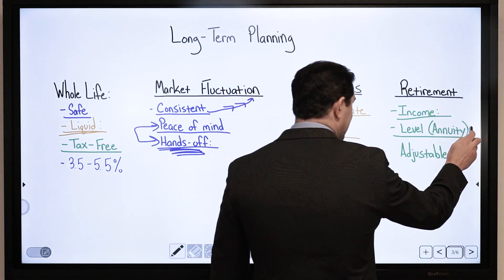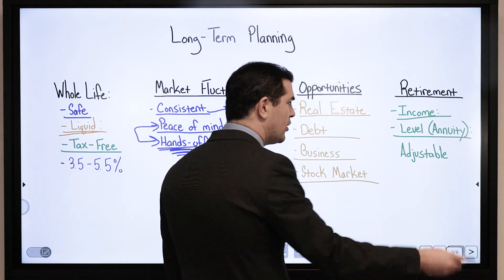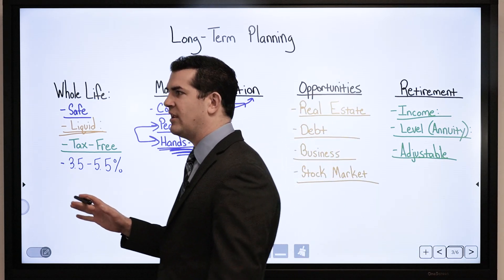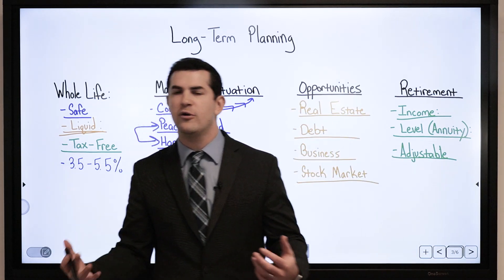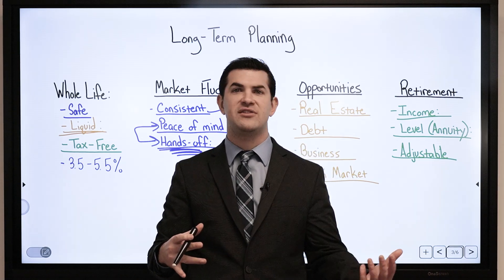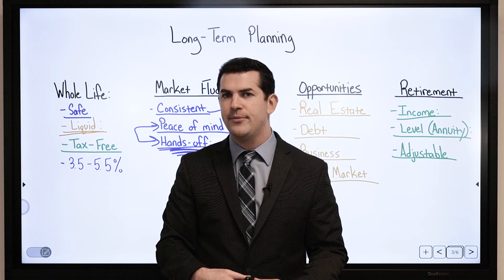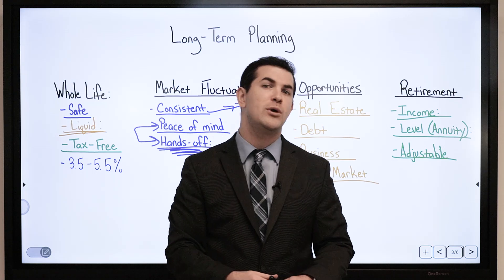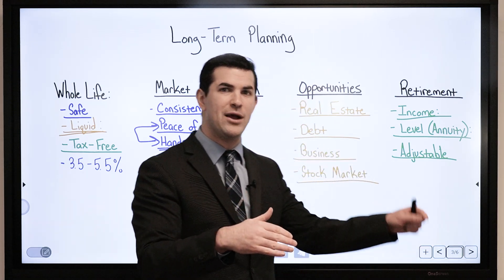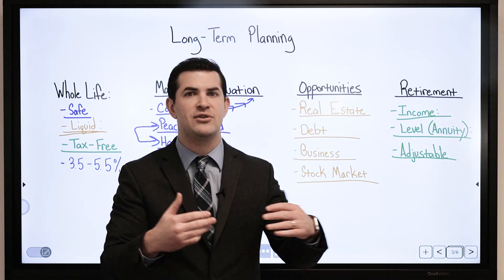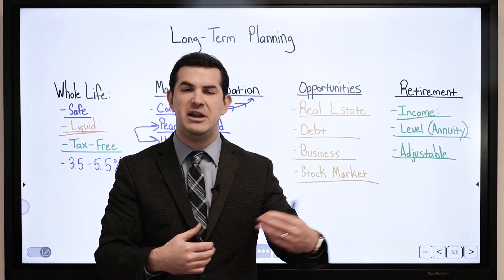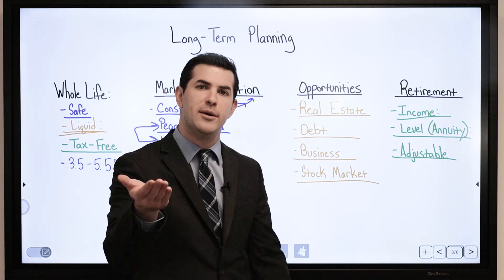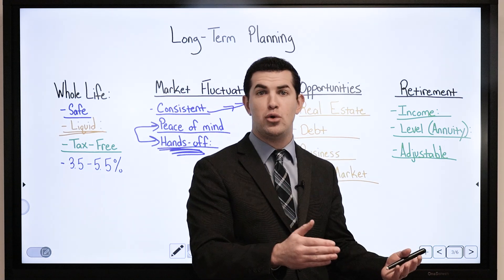In respect to income, we can take out a level income stream or it can be adjustable. I can build a policy and solve to take out $100,000-$150,000 per year in income when I turn 65 or 70. I can also elect to take out different amounts each year. I do not just have to flip on the income switch like I would with an annuity. I can say I want $100,000 this year, $50,000 next year, $70,000 the following. You can bounce it up and down. You've got complete control there.